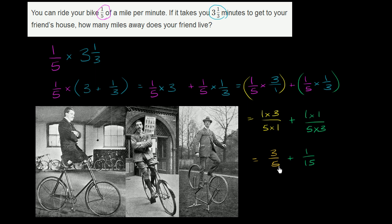And now we have different denominators here, but lucky for us, 3 over 5, if we multiply the numerator and the denominator by 3, we're going to get a denominator of 15. And so that's equal to 9 over 15 plus 1 over 15, which equals 10 over 15. And if you divide the numerator and the denominator both by 5, you're going to get 2 over 3. So your friend lives 2 thirds miles away from your house.